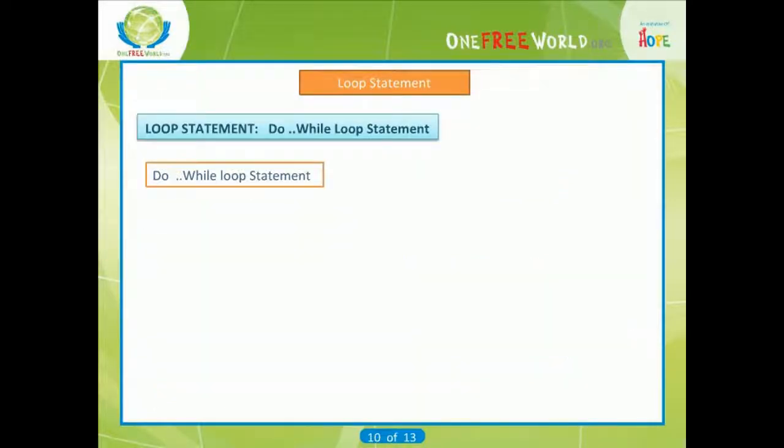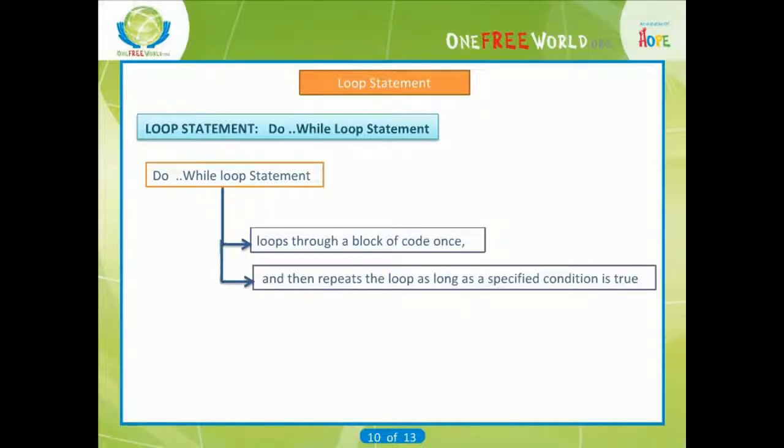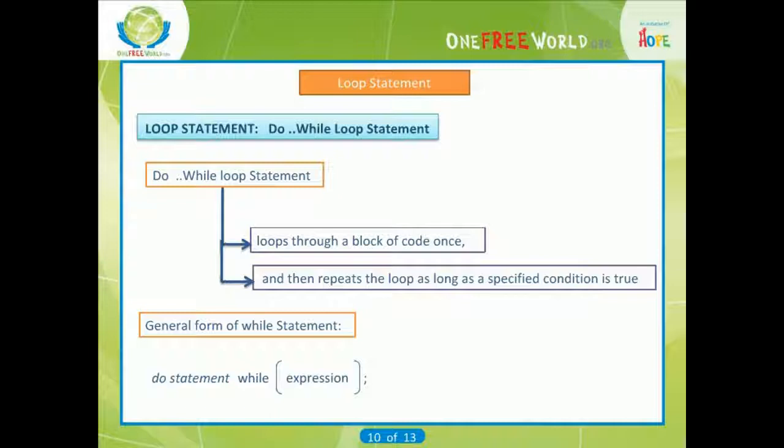Do-while loop statement loops through a block of code once and then repeats the loop as long as a specified condition is true. The general form of the do-while statement is: do statement while (expression). The statement will be executed repeatedly as long as the value of expression is true, that is, is non-zero.